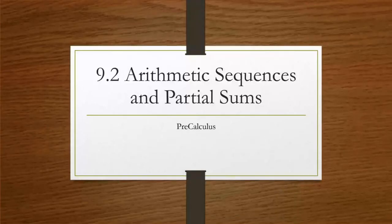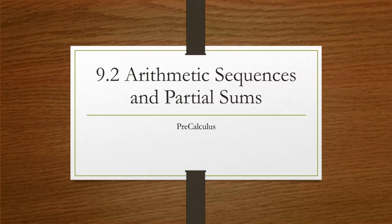I have a video in the classroom for 9.1, so this is basically the next section, 9.2, which is arithmetic sequences and partial sums. These for some reason tend to be harder for people than 9.3, which is geometric. Not really sure why, but most of the mistakes happen with this section rather than 9.3.